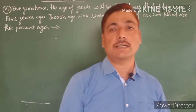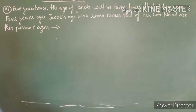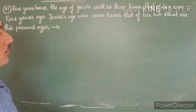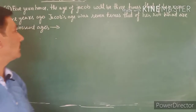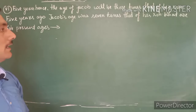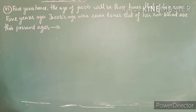Good morning students. Let's see the third question of your exercise, last part. The problem is: five years after the age of Jacob will be three times that of his son, and five years ago Jacob's age was seven times that of his son. We will find the present age of Jacob and his son.